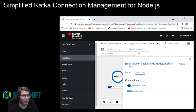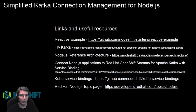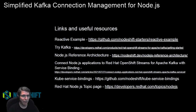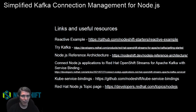I don't want to take too much of your time, so I'm going to leave you with some useful links. There's the reactive example I was using where you can see a producer/consumer connecting to Kafka. There are links to try Kafka, where you can get a Kafka instance. There's the Node.js reference architecture I mentioned, where you can read about different modules our teams have had success with. And there's a great blog post that goes into more detail on connecting applications with service bindings.